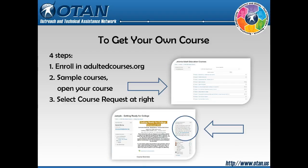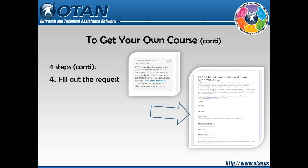To get your own course, there are four steps. First, enroll at adultedcourses.org. Second, find the course you want to sample and select the course you want for your very own. Third, go to the course request form on the right. Finally, fill out the course request form. Usually it takes less than a week for OTAN to get back with you and add the course to your school site.